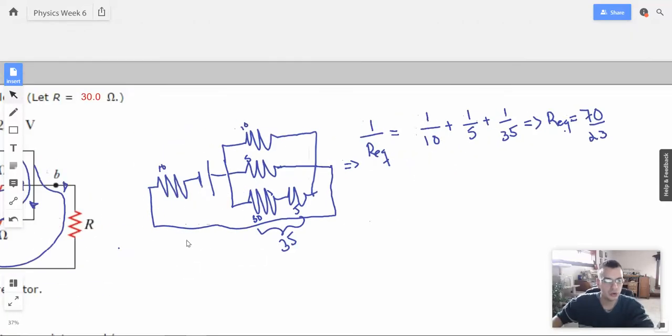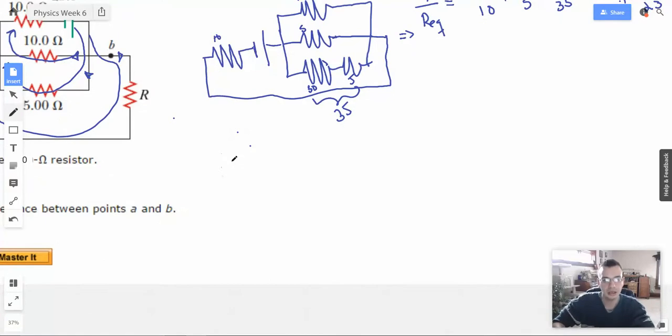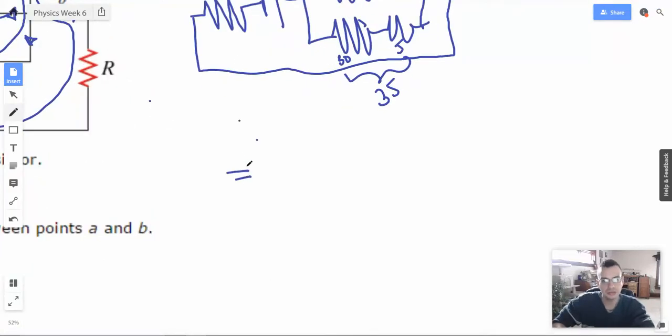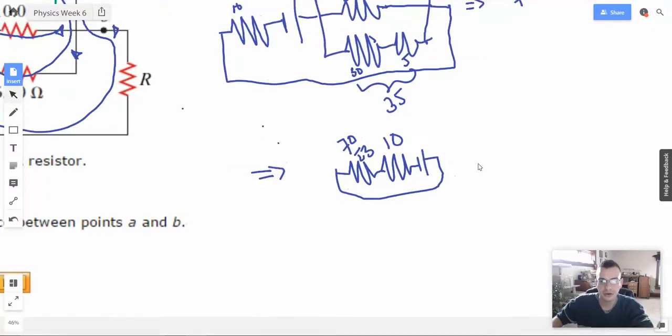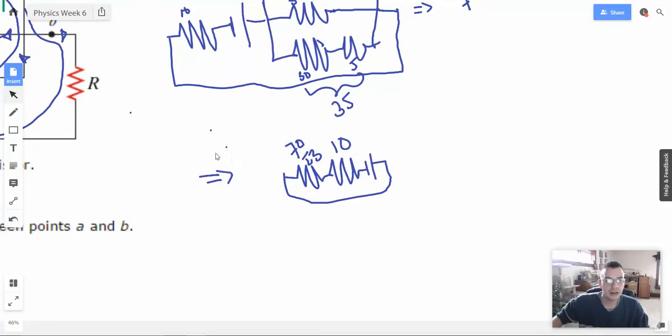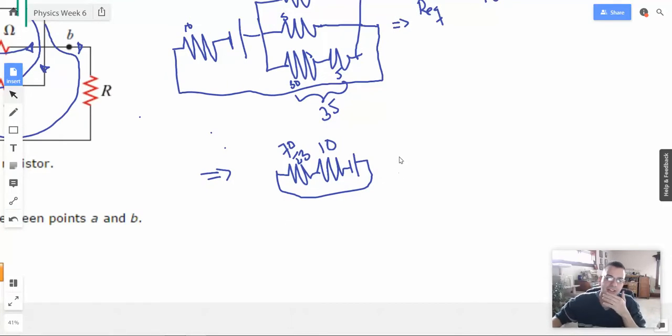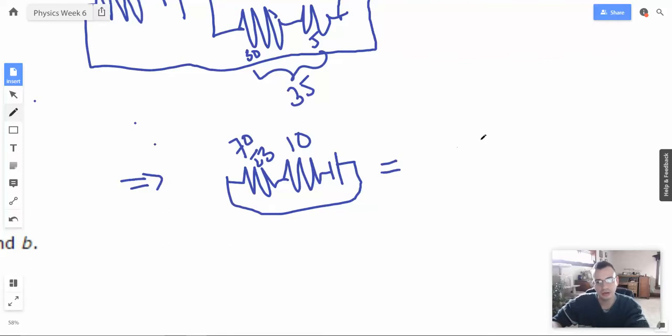And now we need to take into account this other resistor. So we have one resistor, two resistors, and battery. So this guy was 70 over 23, and then this guy was 10. So then, finish this guy up. We're going to add those together. So it would be 230 plus 70. We're going to do this as 230 plus 70, I was going to say 303. So 303 over 23, resistor and battery. Perfect.